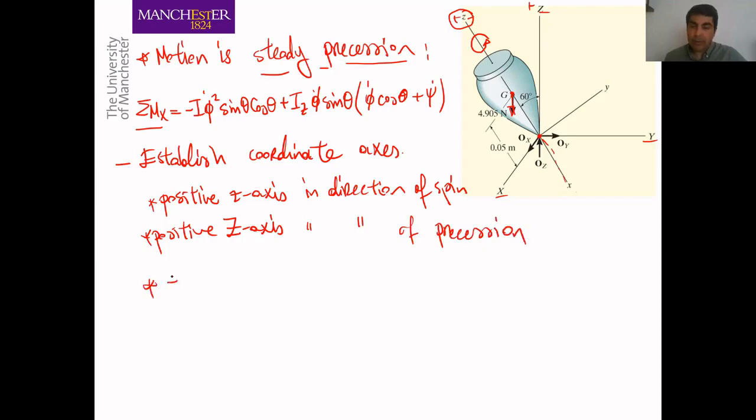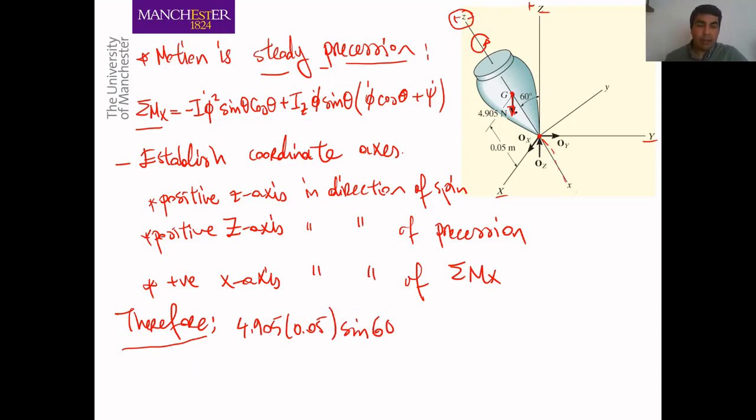Positive X axis in the direction of total M_X. Therefore, our equation becomes 4.905 times 0.05 sine theta.